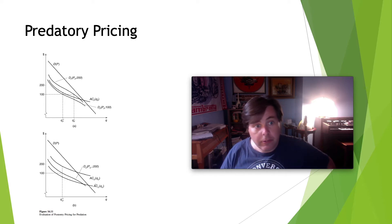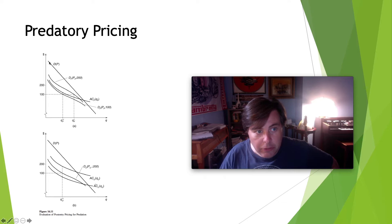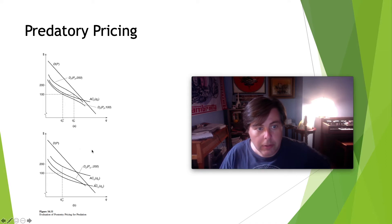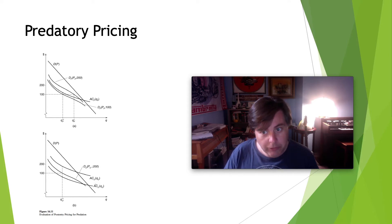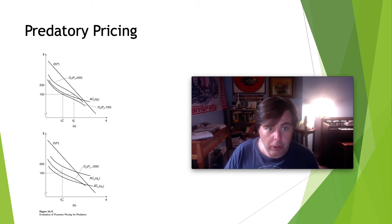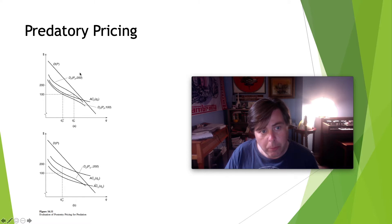Let's look at this situation as it's graphed out. This is the industry demand — price on one axis, quantity on the other. The residual demand for the small airline is what remains once passengers have bought big airline tickets. When the big airline's price is $200, the residual demand for the small airline looks like this — they can profitably provide service at $100.